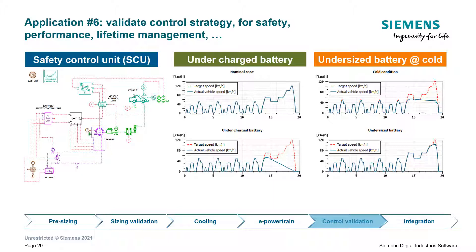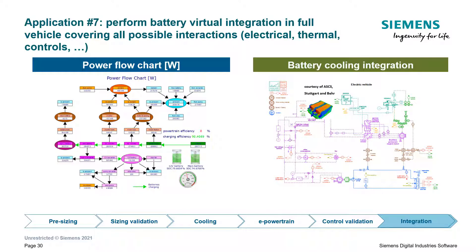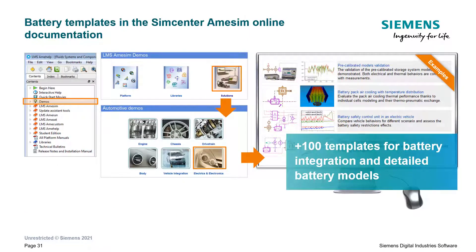In electric powered vehicles, battery usage must be monitored to ensure safe conditions and prevent early battery aging. Thanks to the battery model coupled with safety control strategy models, it is possible to simulate the impact of battery limitations on electric vehicle behavior, assess the operation of a battery management system under various operating conditions, and validate these strategies. The battery model can also be virtually integrated in a full vehicle to check how different phenomena impact overall energy consumption. Simcenter AimSim documentation comes with ready-to-use templates and dedicated user guides covering battery packs, battery cells, electric storage aging, and more.